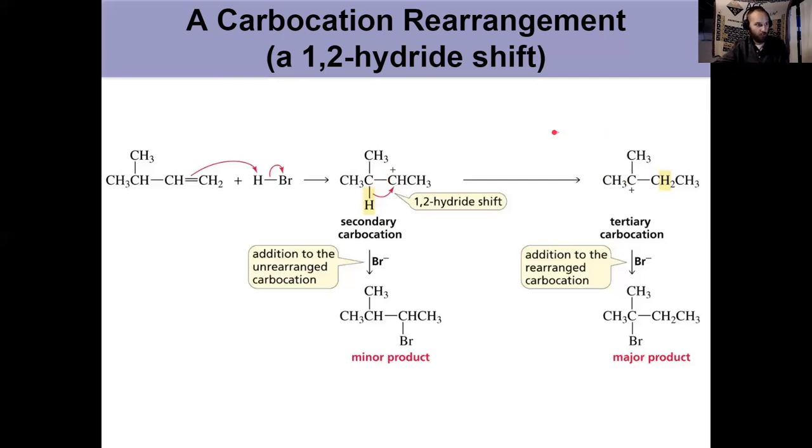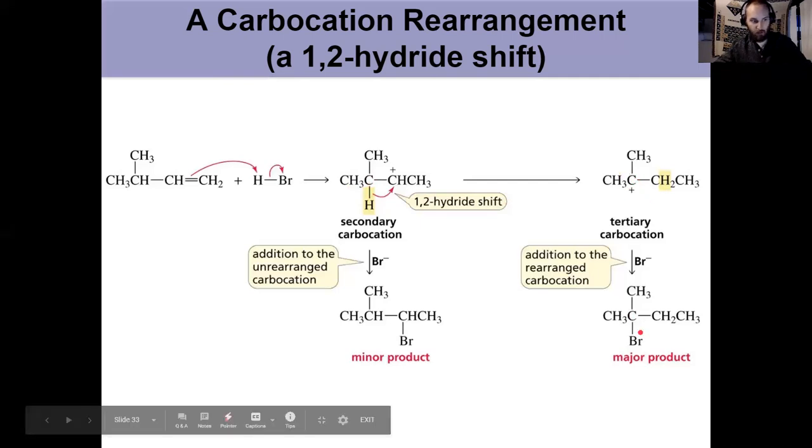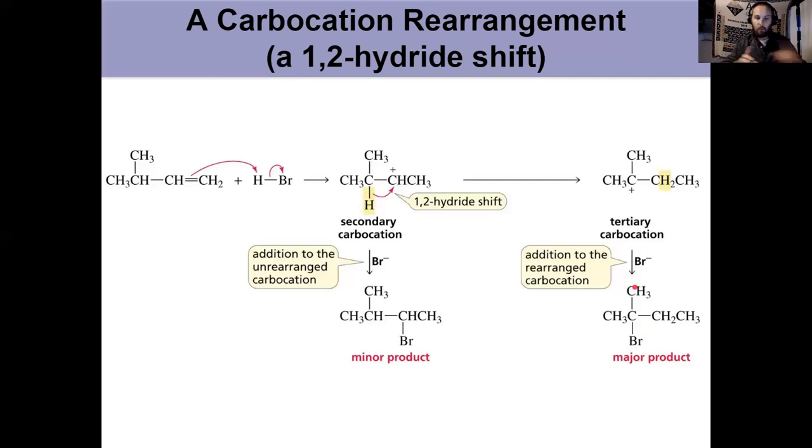By a 1,2 hydride shift. So, 1 and 2 coming from the fact it's not from nomenclature. It's just the fact that the two carbons are directly next to each other, 1 and 2. Because a carbocation can only ever move one spot, one sigma bond away. It can't just move to a different side of the molecule unless we have a conjugated system. But we'll talk about that in Chapter 8. So, a 1, 2 hydride shift gives me a more stable tertiary carbocation, and that's where I get my major product from after bromide adds to that. But remember, it only ever happens if you go up in stability from primary to secondary, primary to tertiary, or secondary to tertiary.